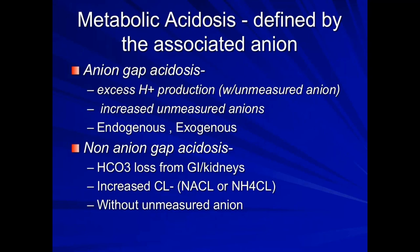Metabolic acidosis is defined by the associated anion. The anion gap acidosis is caused by excess hydrogen production — your body is making excess hydrogen, and those hydrogen ions come with an anion. The anion gap acidosis increases your unmeasured anions. They're either endogenous (your body makes it) or exogenous (you take it in). The non-anion gap acidosis is caused by bicarb loss from the GI or kidney, or increased chloride infusion — for example, giving a DKA patient normal saline gives them chloride, and the bicarb has to go down.